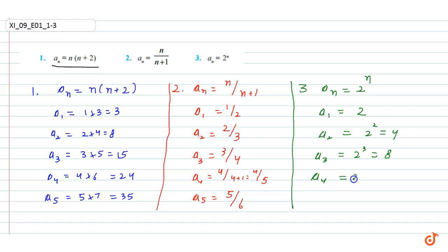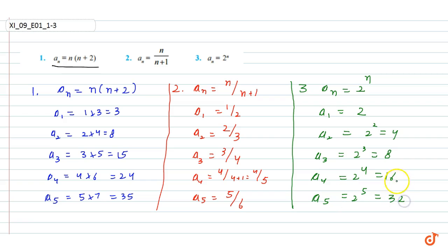Then a_4 = 2⁴ = 16 and a_5 = 2⁵ = 32. So these are the five terms for all three questions.